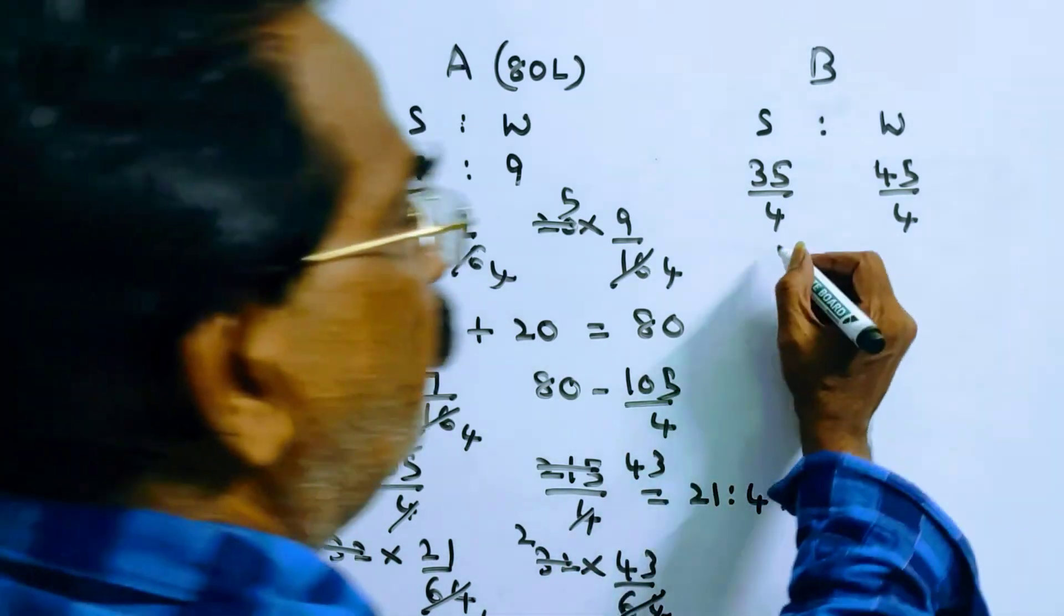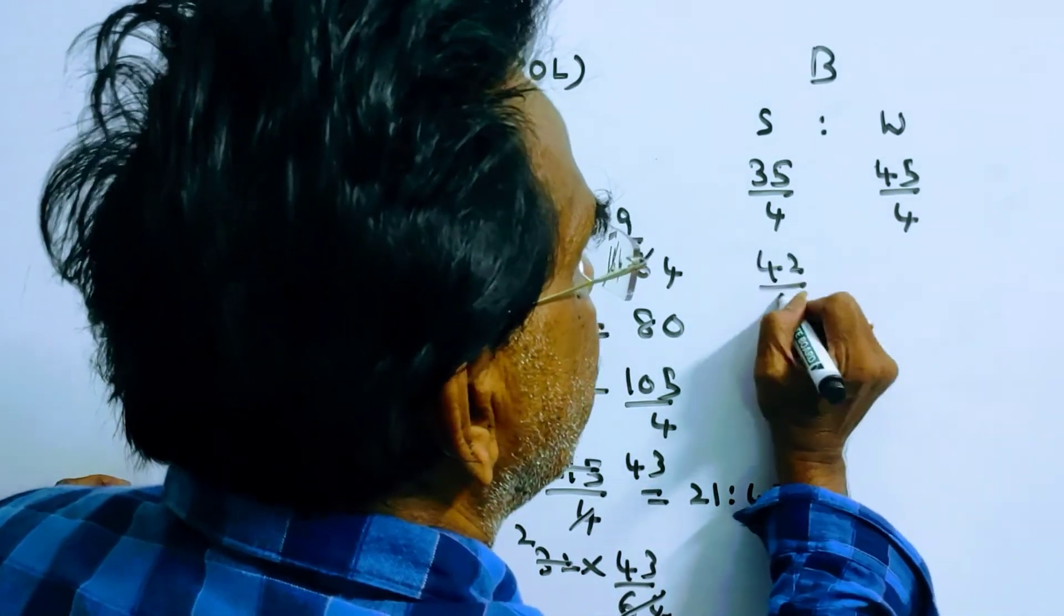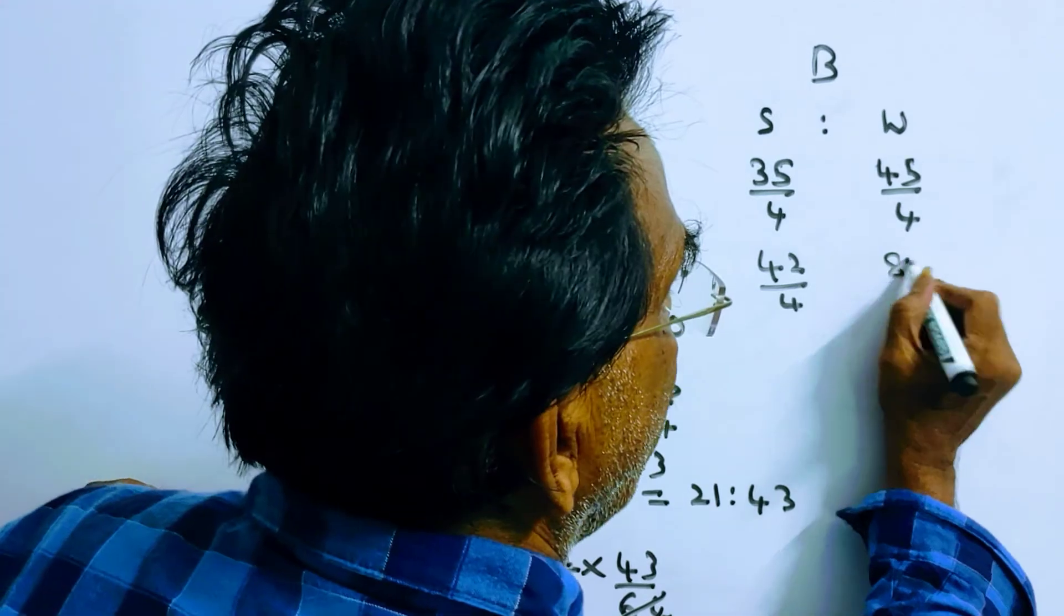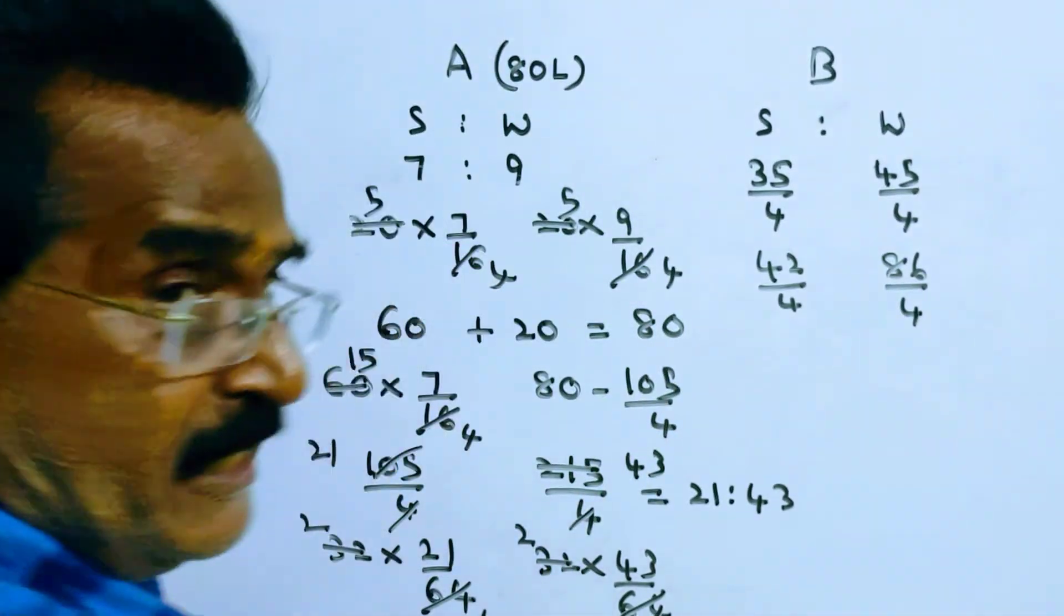So 2 × 21 = 42/4 spirit is transferred, and 2 × 43 = 86/4 water is transferred.